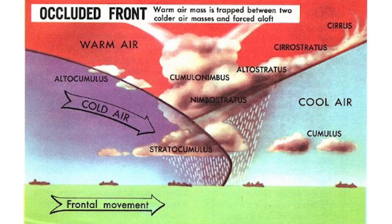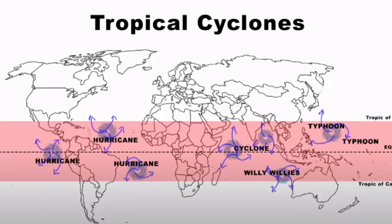The cyclone is known to have different names in different regions of the world. In the Caribbean Sea, it is called hurricanes. In the China Sea, it is called typhoons. In the Indian Ocean, it is called tropical cyclones. In Japan, it is called typhoons. In northern Australia, it is called willy willies. In the Philippines, it is called bagyo. In the USA, it is called tornadoes.